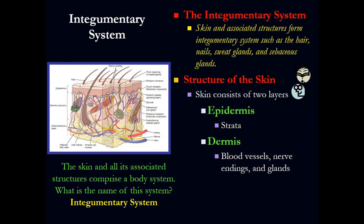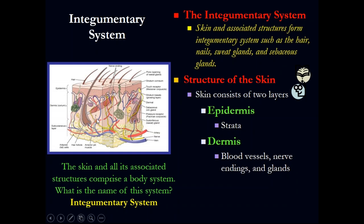What else do we have in the epidermis? We have melanocytes — those are the ones who give pigmentation to the skin. They contain melanin. Below that, in the dermis, we have all the structures you can think about: the hair follicle, sebaceous glands, the erector pili muscle that makes the hair erect, and the arteries, veins, and lymphatics.